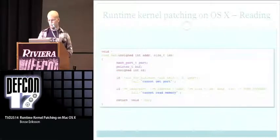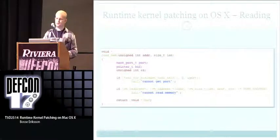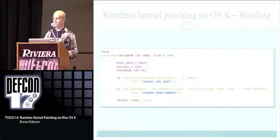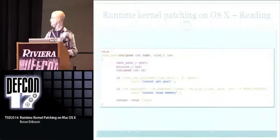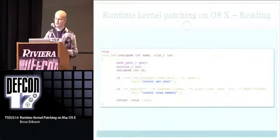Here's a simple function using this for reading memory. You call task_for_pid with PID zero — which is the XNU kernel running in OSX — and what you get is a port to the kernel. Then you use vm_read, vm_write, and vm_allocate to manipulate the kernel's memory space. It's literally about 10 lines of code to read kernel memory as root. Pretty awesome if you want to rootkit a machine.